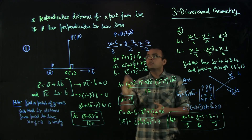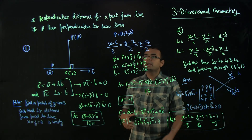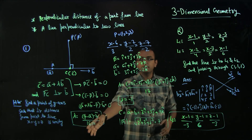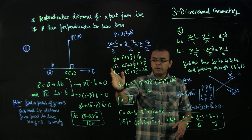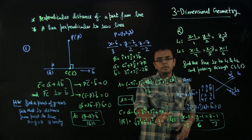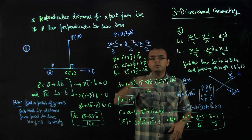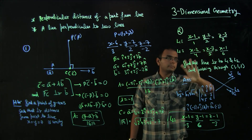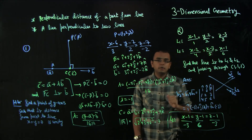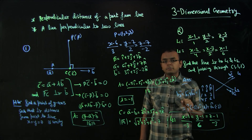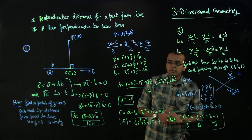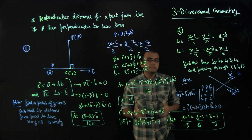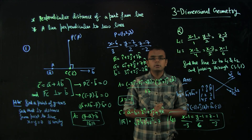So we discussed two things: first, how to find the perpendicular distance of a point from a line — remember the lambda formula, calculate the foot of perpendicular, then subtract with the original point to get the distance. Second, finding a line perpendicular to two lines — take the cross product of the parallel vectors to get the direction, then write the line equation. I hope you enjoyed this video. Thank you.